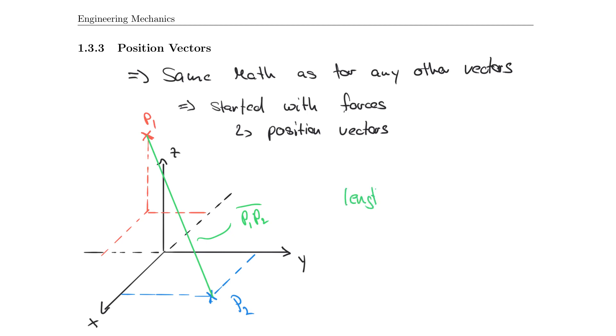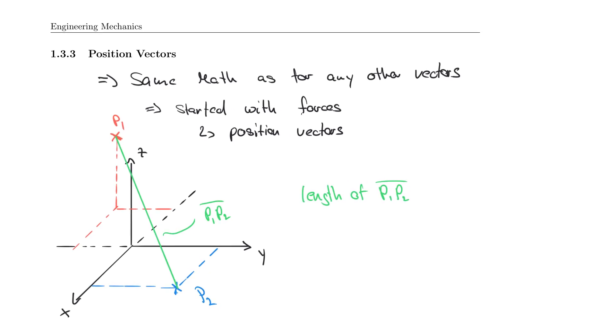And how would you calculate the length? So the length of p1, p2 is really similar to what we've seen before, nothing else than the difference between p2 and p1. So it would be p2 minus p1 or p1 minus p2, depending on how you look at the system. But you can always calculate that using the initial points.